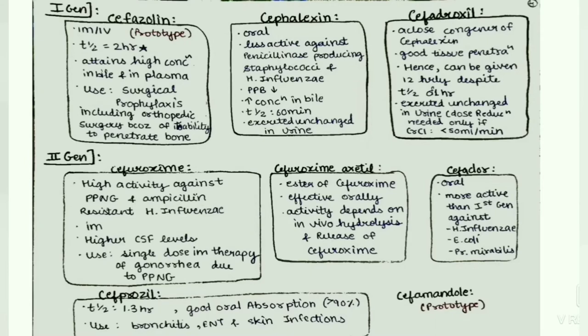Now we will move to second generation cephalosporins. Cefuroxime has high activity against PPNG and ampicillin-resistant H. influenzae. It is given intramuscularly, and higher CSF levels are attained. Its use is single-dose intramuscular therapy of gonorrhea due to PPNG. Next, cefuroxime axetil — it is the ester of cefuroxime, effective orally, and its activity depends on in vivo hydrolysis and release of cefuroxime.